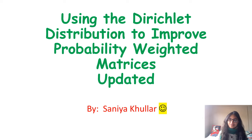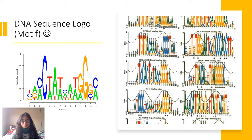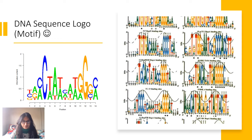Today I want to talk about how we can use the Dirichlet distribution to improve the probability-weighted matrices that we get. Here you're going to see that we have these DNA sequence logos, and what we usually have is the different bases representing the different positions along the DNA sequence. The higher the position, the more certain we are about the DNA base being that particular value. So here it's a C — we'll definitely show it's a C. And this is also a G, at the same height. Anytime we're not so sure and it's divided among three bases, the height diminishes. And when it's for all four bases, the height is even smaller.